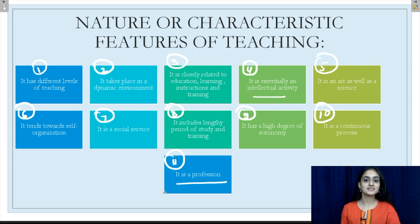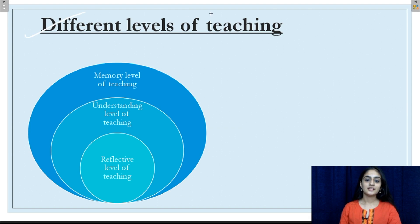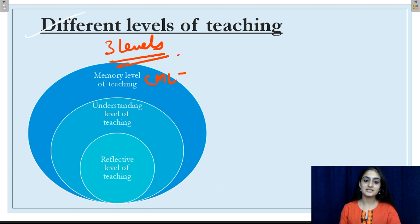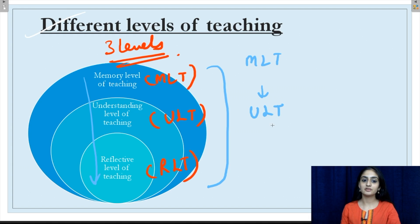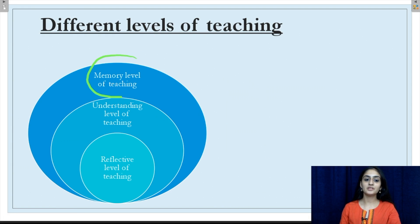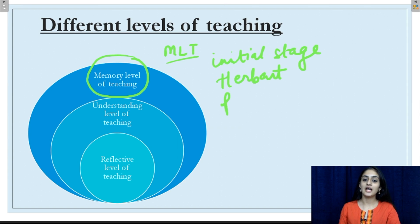Let's discuss all these characteristic features in detail. The first characteristic is the different levels of teaching. There are three levels: the first is memory level of teaching, or MLT; understanding level of teaching; and the reflective level of teaching. This order is very important since it often comes in the exam. So the order is MLT, then understanding level teaching, and then reflective level of teaching. The memory level of teaching, or MLT, is the initial stage of teaching. This level was proposed by Herbert and it induces the habit of rote learning.